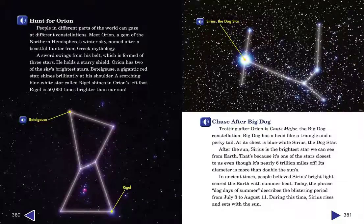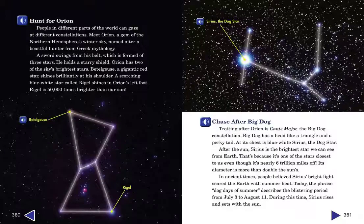Hunt for Orion. People in different parts of the world can gaze at different constellations. Meet Orion, a gem of the northern hemisphere's winter sky, named after a boastful hunter from Greek mythology. A sword swings from his belt, which is formed of three stars. He holds a starry shield.